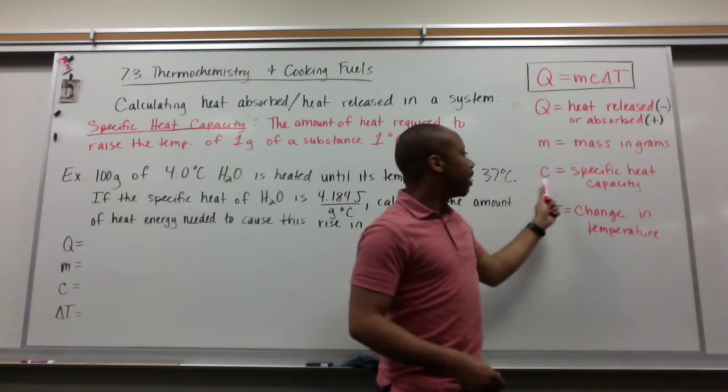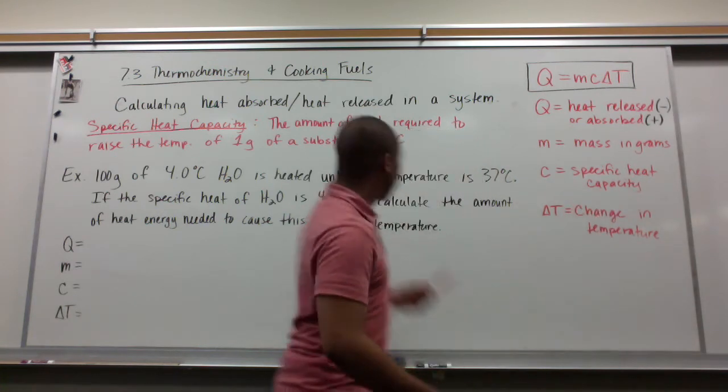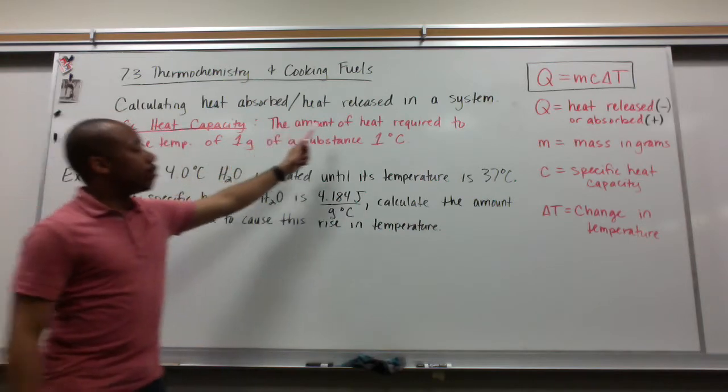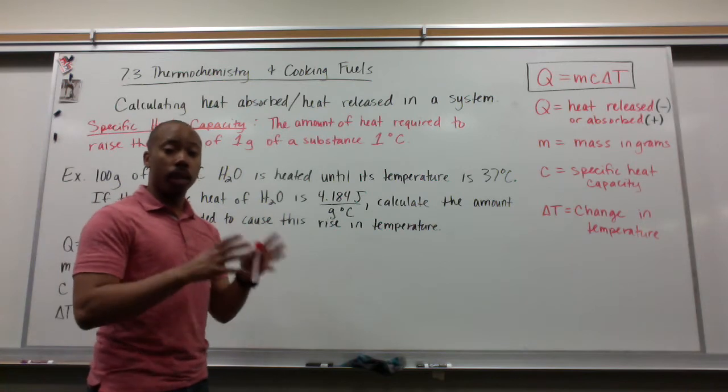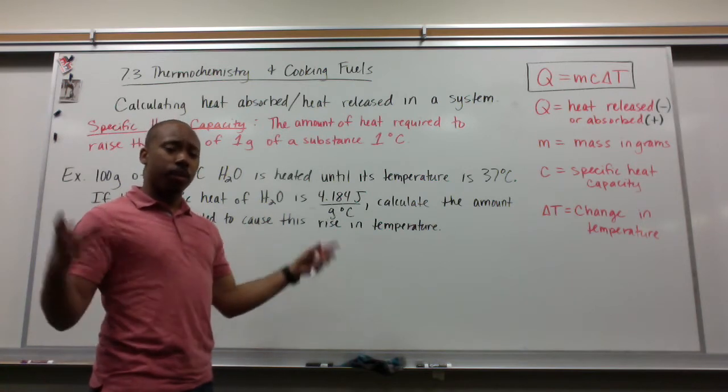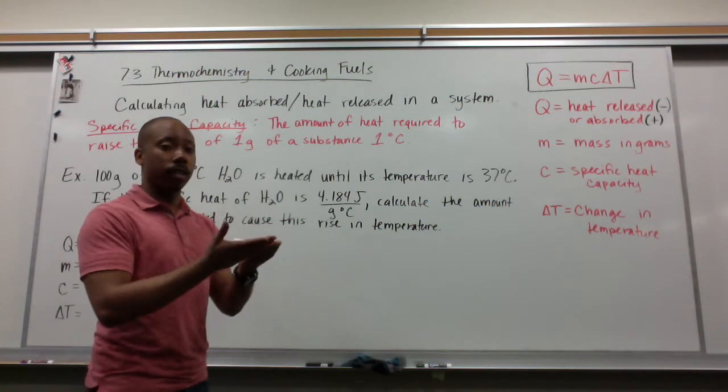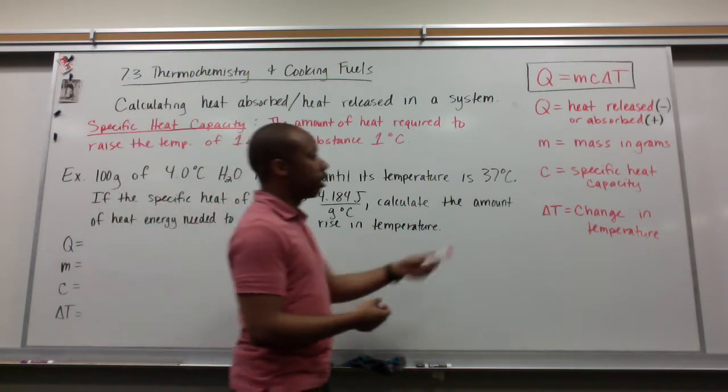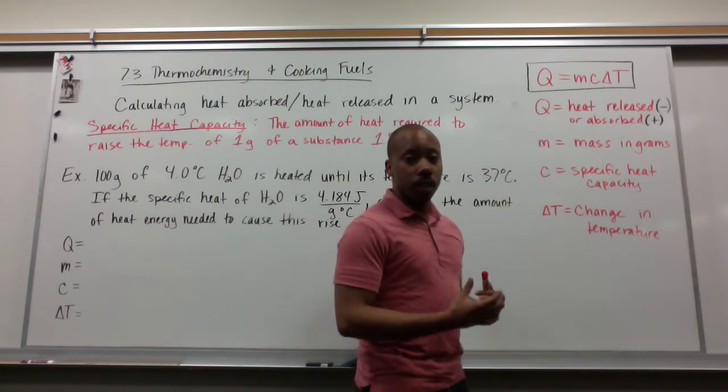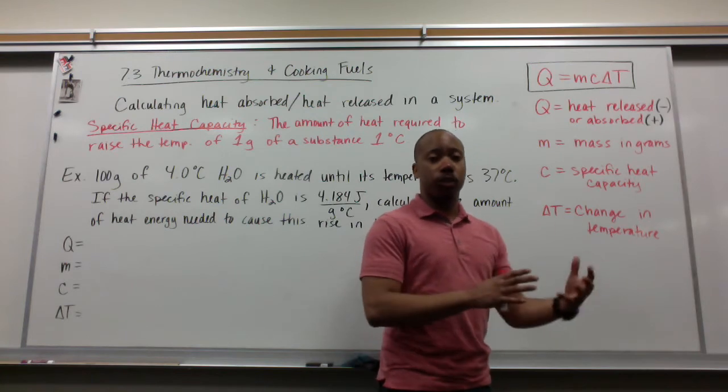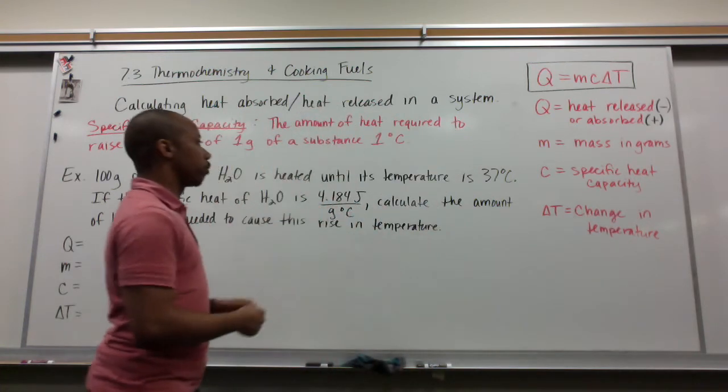M is the mass in grams. C is the specific heat capacity. Specific heat capacity is the amount of heat required to raise the temperature of 1 gram of a substance 1 degree Celsius. So, how much energy must you put into a substance to make 1 gram of it increase by 1 degree Celsius? That is the specific heat capacity. Lastly, we have delta T, the change in temperature. That's your T final, your final temperature minus your initial temperature.